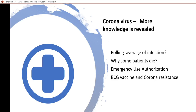Hi guys, in this short video we are going to learn some terminology and new information about the coronavirus which has been revealed by scientific studies. What is rolling average infection? Why do some COVID patients die? What is emergency use authorization related to COVID, and what is the relation between the BCG vaccine and coronavirus?